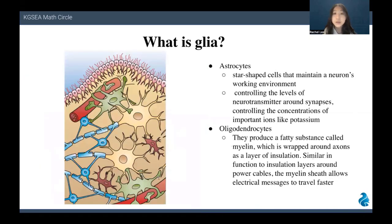The second type of glia is called astrocytes. They are star-shaped cells that maintain the neurons' working environment, controlling the levels of neurotransmitters around synapses, controlling the concentrations of important ions like potassium. Then there's the oligodendrocytes. They produce a fatty substance called myelin, which is wrapped around the axons as a layer of insulation. Similar in function to insulation layers around power cables, the myelin sheath also allows electrical messages to travel faster.